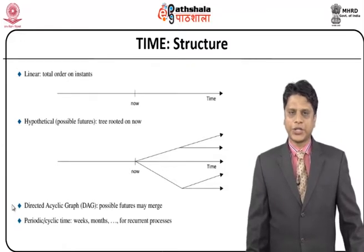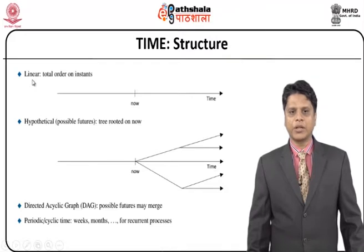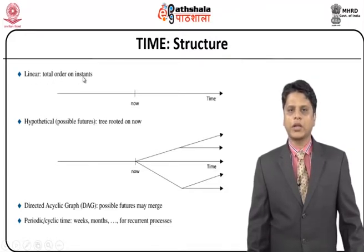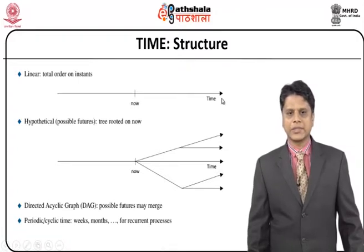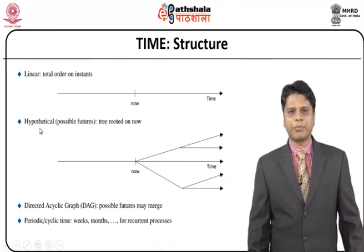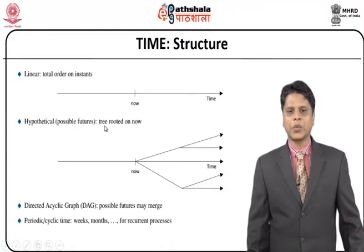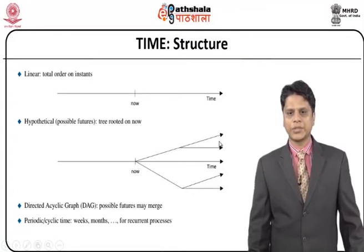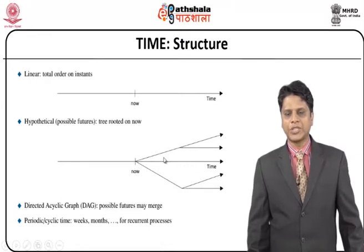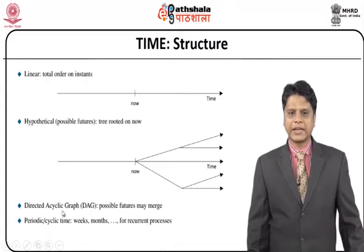As we have looked at the structure of time, this is what we have been mentioning as a linear model — the total order on instances has been presented here. Once a transaction has started or an event has occurred, I might update an event with a state of 'now' and this progresses. Whereas in a hypothetical case, I might use a branching model, which are said to be the possible future models. There can be branches with a tree rooted on 'now,' but a directed acyclic graph would be the possible future to merge on multiple events like this.